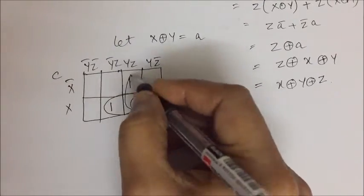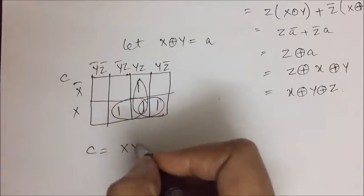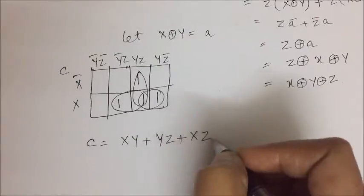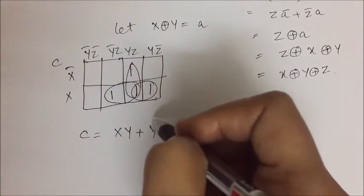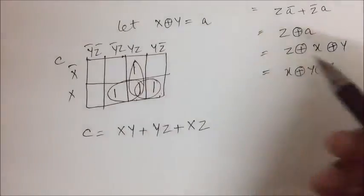Now when I go for grouping, we will have grouping like this. So I can write c as x y plus y z plus x z. So here this is nothing but y z. This grouping is x z and this grouping is x y.